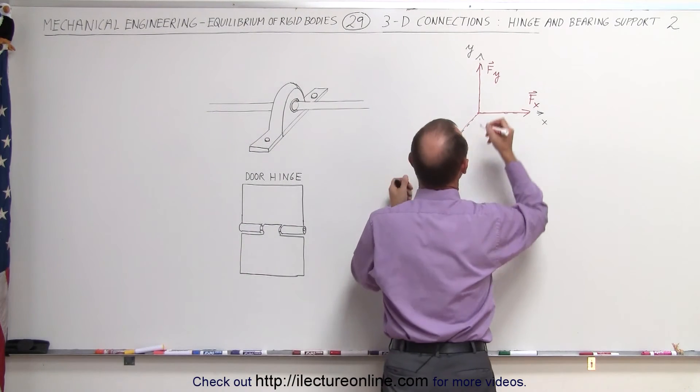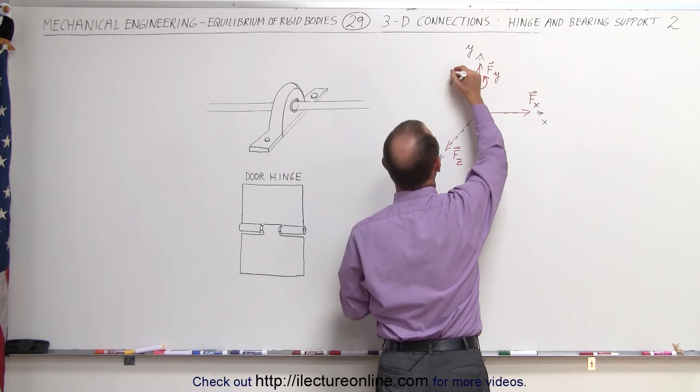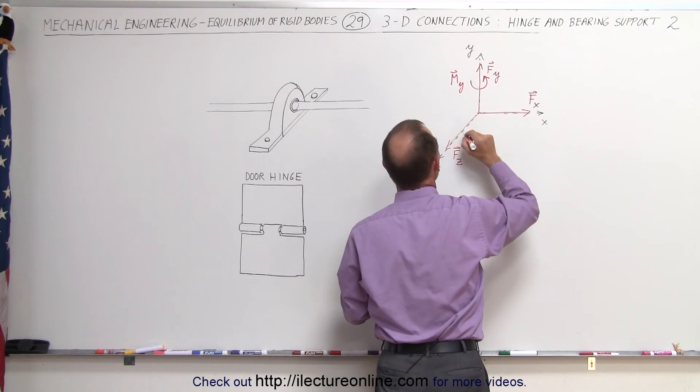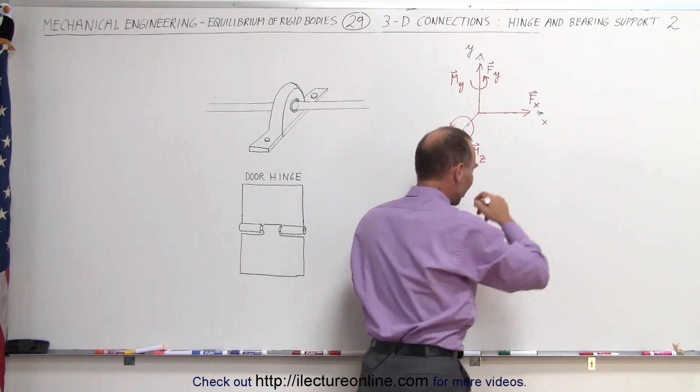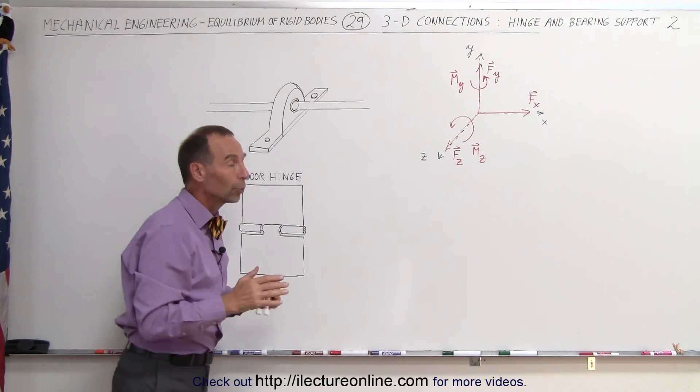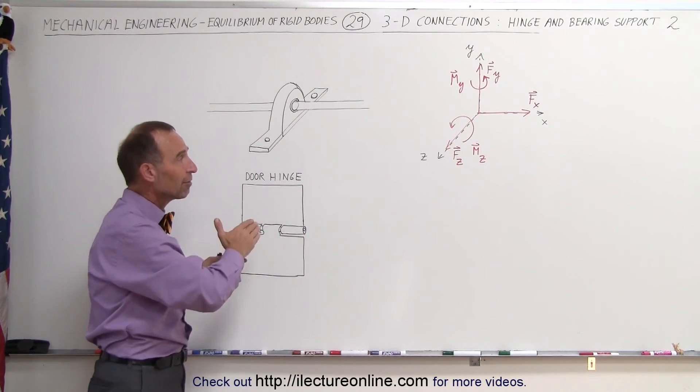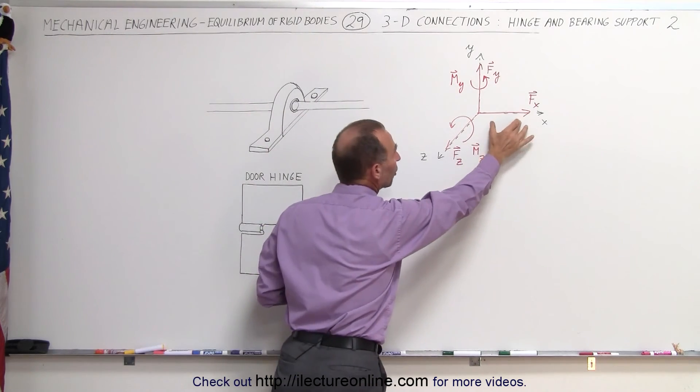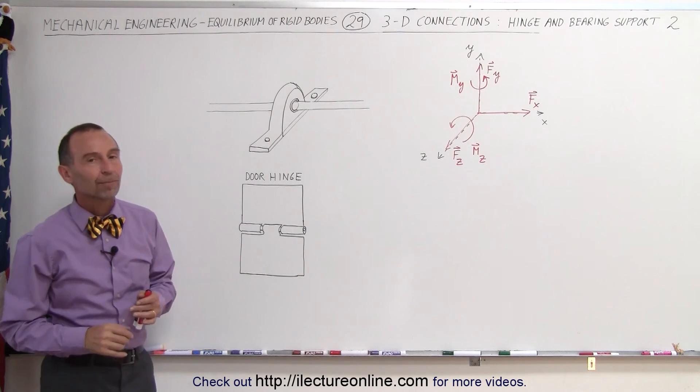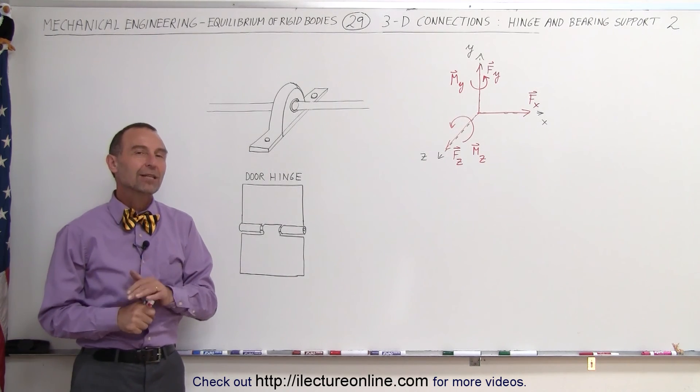So in the Y direction we do have a moment like that, so that's the moment in the Y direction and Z direction we do have a moment like this Z direction just like we had in the previous video. The only difference between this and what we saw before is that we now have a constraint in the X direction adding an additional unknown force in that direction and that's how we look at 3D supports.